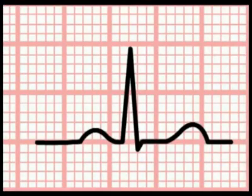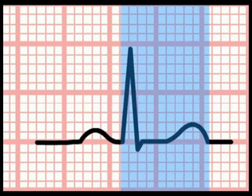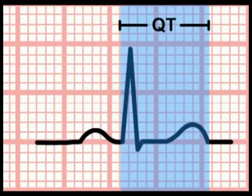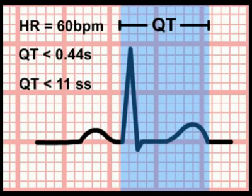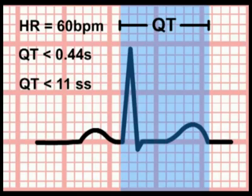Finally, the duration of ventricular repolarization is crucially important in clinical practice. The time between the onset of ventricular depolarization and the end of ventricular repolarization — that is, the beginning of the QRS complex and the end of the T wave on the ECG — is termed the QT interval. When the heart rate is 60 beats per minute, the upper limit of normal for the QT interval is 0.44 seconds, or 11 small squares. It is important to realize, however, that the measured QT interval varies with heart rate, becoming shorter as the heart speeds up. Therefore, at higher heart rates, it is possible to miss an underlying prolonged QT interval.